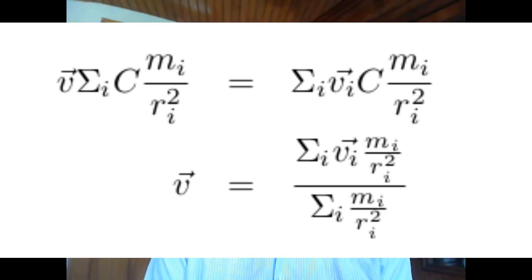To conclude this video, we have demonstrated that the Earth is surrounded by some sort of media which is the reference frame for all velocities, and that this media is following the Earth in its path through the universe. And we have also demonstrated that special relativity is wrong.